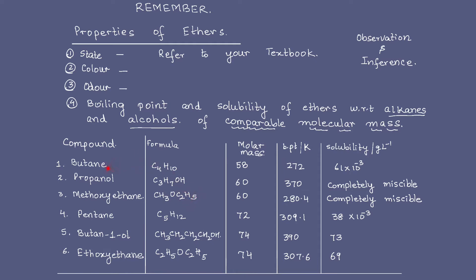Now let's compare their boiling point first. Boiling point of butane is 272, even less than 0 degrees Celsius. Propanol is 370, almost 100 degrees Celsius difference between the two. Methoxyethane is 280, which is much closer to that of butane, far away from propanol. We are talking about the boiling point.